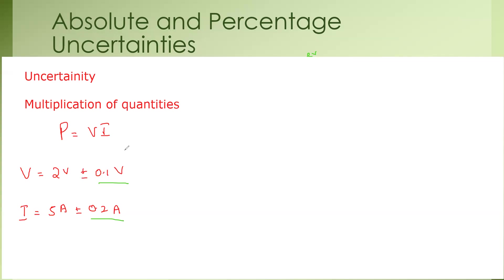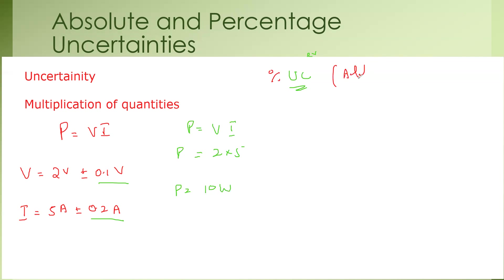Whenever two quantities have different units, we cannot add them directly — for example, I cannot add volts to amperes, it doesn't give any physical meaning. So what we do in that case is work out the percentage uncertainty and then add them.